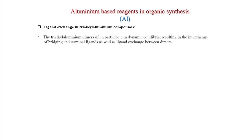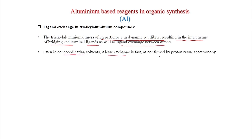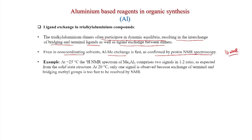Ligand exchange in trialkyl aluminum compounds: the trialkyl aluminum dimers participate in dynamic equilibria involving interchange of bridging and terminal ligands and ligand exchange between dimers. Even in non-coordinating solvents, aluminum-methyl exchange is fast, confirmed by 1H NMR. At −25°C, the 1H NMR of Me6Al2 shows two signals in a 1:2 ratio as expected from the solid-state structure, indicating no equilibration. At 20°C, only one signal is observed because exchange of terminal and bridging methyl groups is too fast to resolve by NMR.